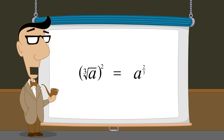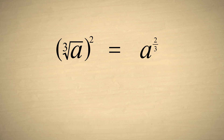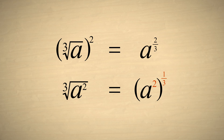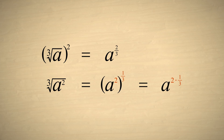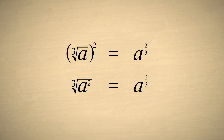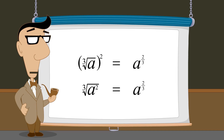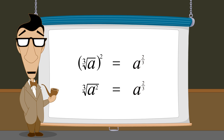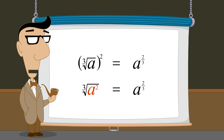However, we could have also come up with a to the two-thirds in a different way. Instead of squaring the cube root of a, we could have first squared a, and then taken the cube root. Using exponents, this would be written as a squared to the one-third power, and multiplying the exponents, once again we get a to the two-thirds power. So in both cases, we get a to the two-thirds power, regardless of whether we start by taking the cube root of a and then squaring it, or start by first squaring a and then taking the cube root.